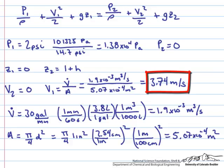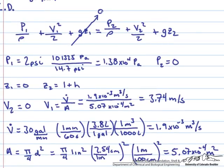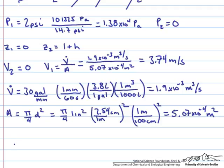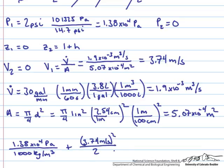Now let's actually plug these numbers in. Z one is equal to zero, P two is equal to zero, and V two is also equal to zero. So plugging in our numbers, P one which is 1.38 times 10 to the fourth pascals over the density of water which is 1,000 kilograms per meter cubed, plus V one squared which is 3.74 meters per second squared over 2, has to equal G times Z two. G is 9.81 meters per second squared times 1 plus H.